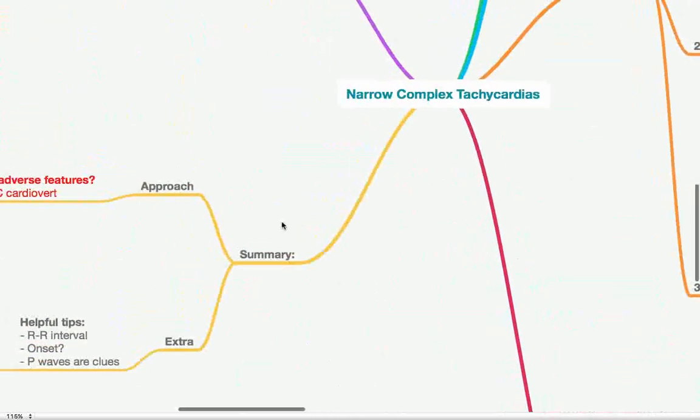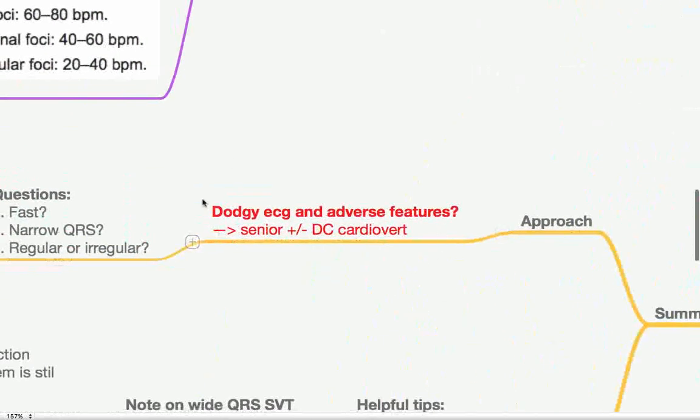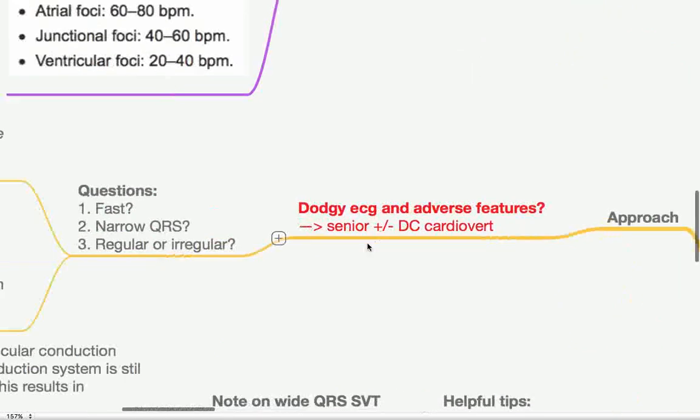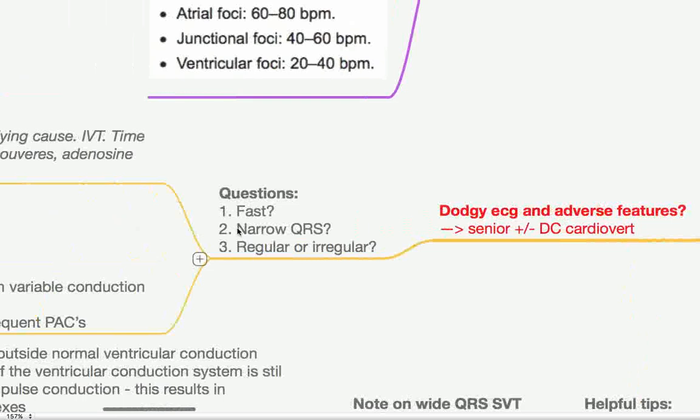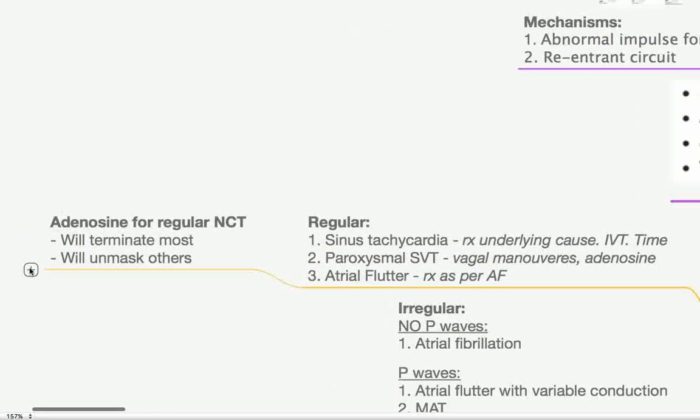Okay, so we've covered quite a lot. Let's wrap this up. So, our approach to the patient with a narrow complex tachycardia. Do they have adverse features and a dodgy ECG? Discuss with a senior or grab somebody and consider DC cardioversion. Let's assume they're stable. The questions we're going to ask are, is it fast? Is it a narrow QRS? And is it regular or irregular? If it's regular, if it's sinus tachycardia, treat the underlying cause, give them some IVT, give them some time. If it's a paroxysmal SVT, you know that umbrella term for all those other rhythms. Try your vagal maneuvers. That can work a lot of the time. Try your adenosine. Third, it could be atrial flutter. Basically, treat as per AF. And a quick word on adenosine, it will work for most regular narrow complex tachycardias and it will unmask some of the others, such as atrial flutter.